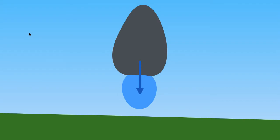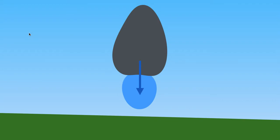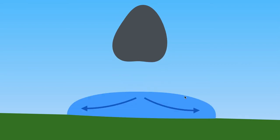Let's take a look at a schematic that illustrates how this process actually occurs. We have a thunderstorm that goes up, precipitation occurs, and that precipitation creates a downdraft — a downward moving current of cold air. That current of cold air cannot go through the ground, so once it hits the ground it spreads out. As it travels radially away from the thunderstorm, that forms the outflow boundary — that current of cold and moist air.